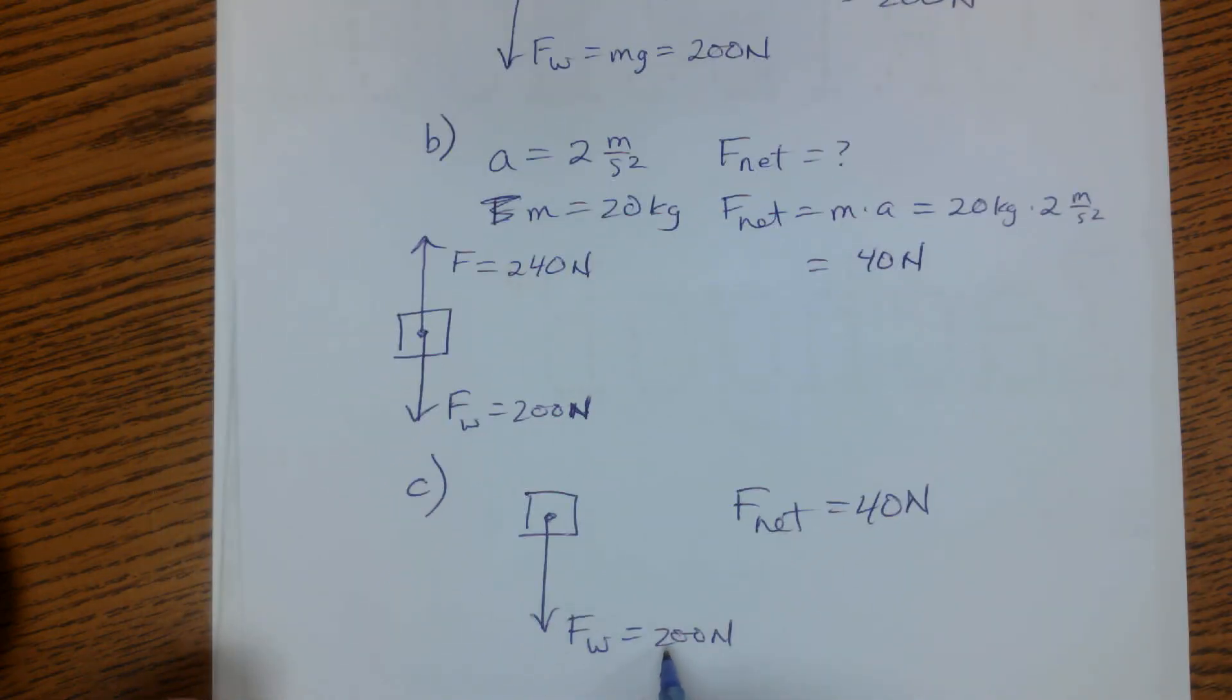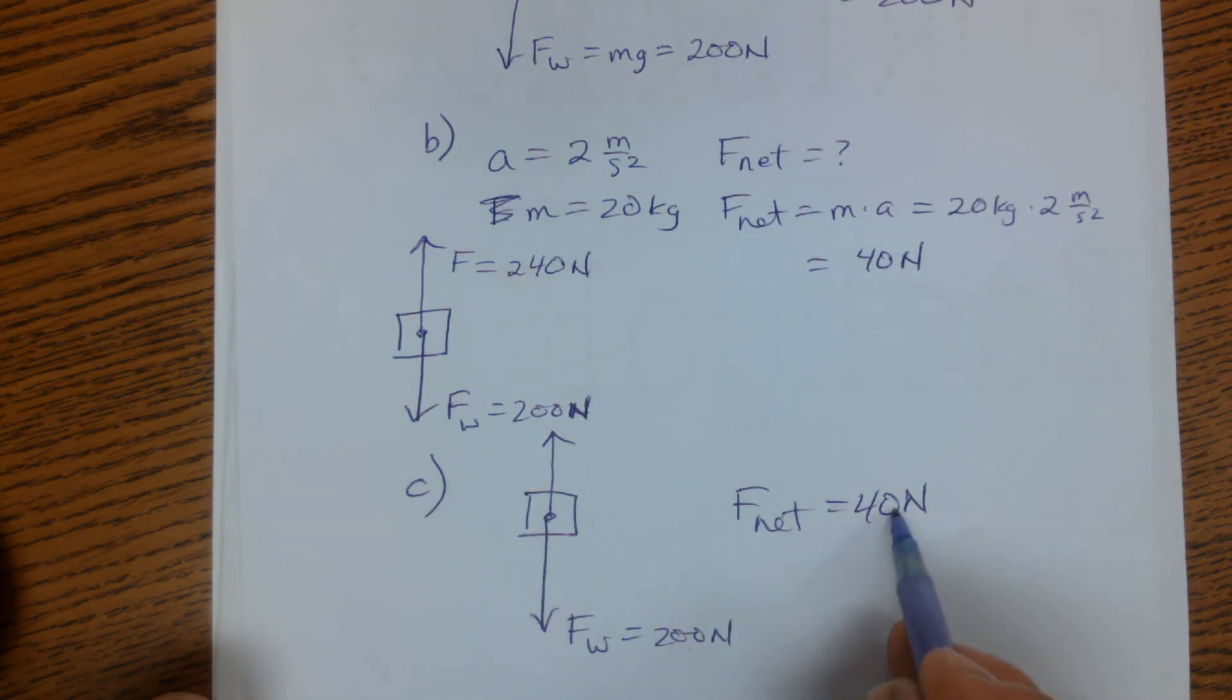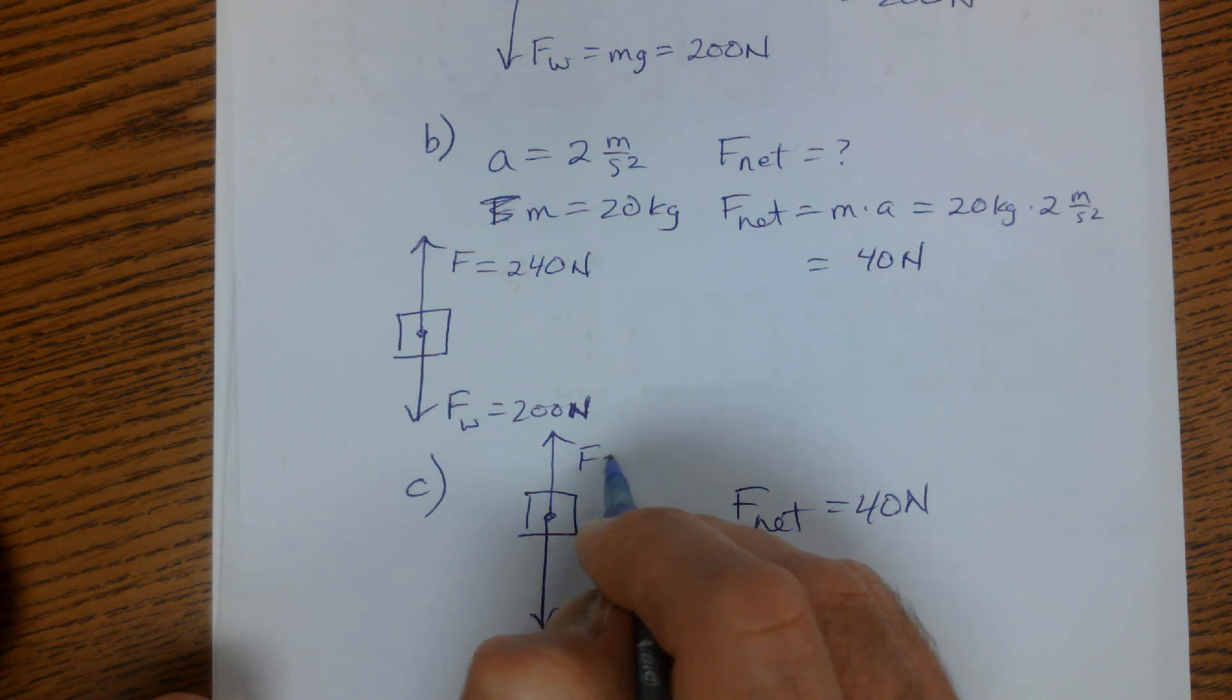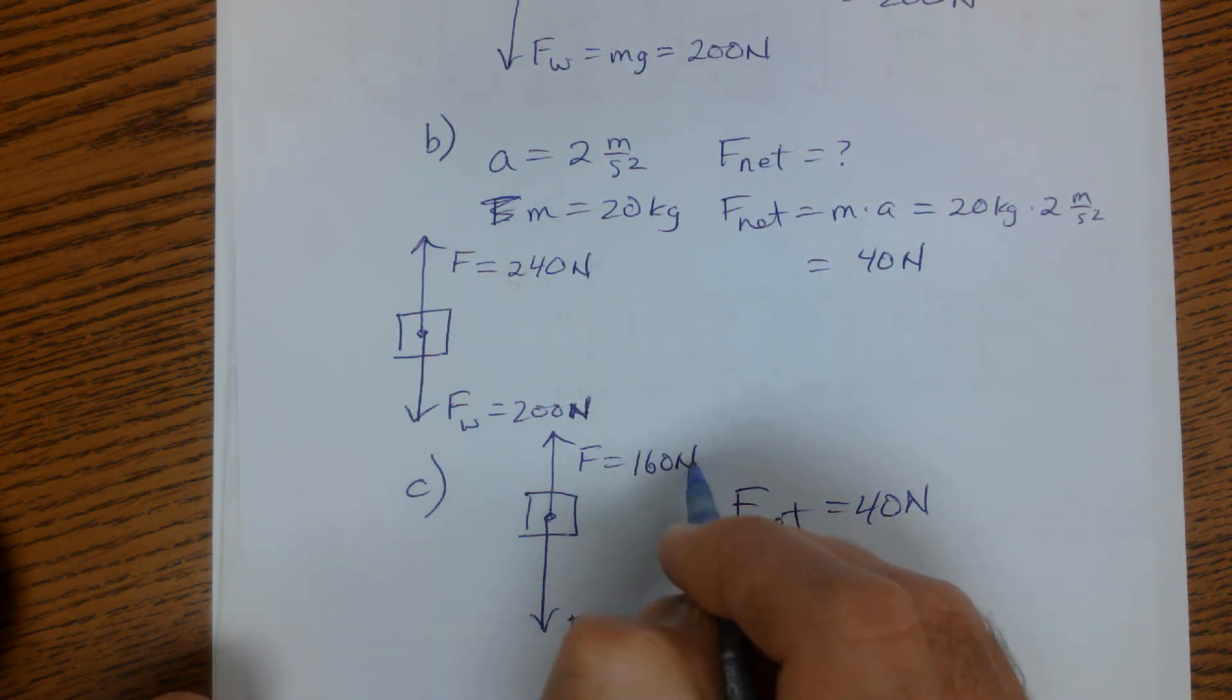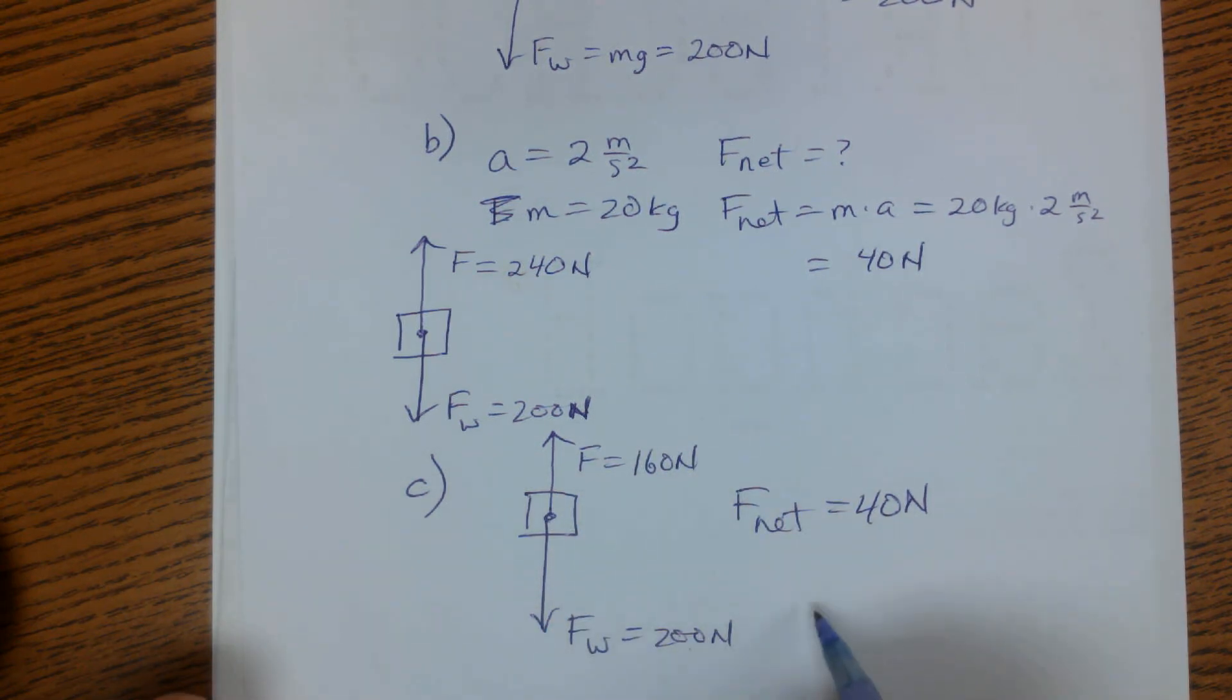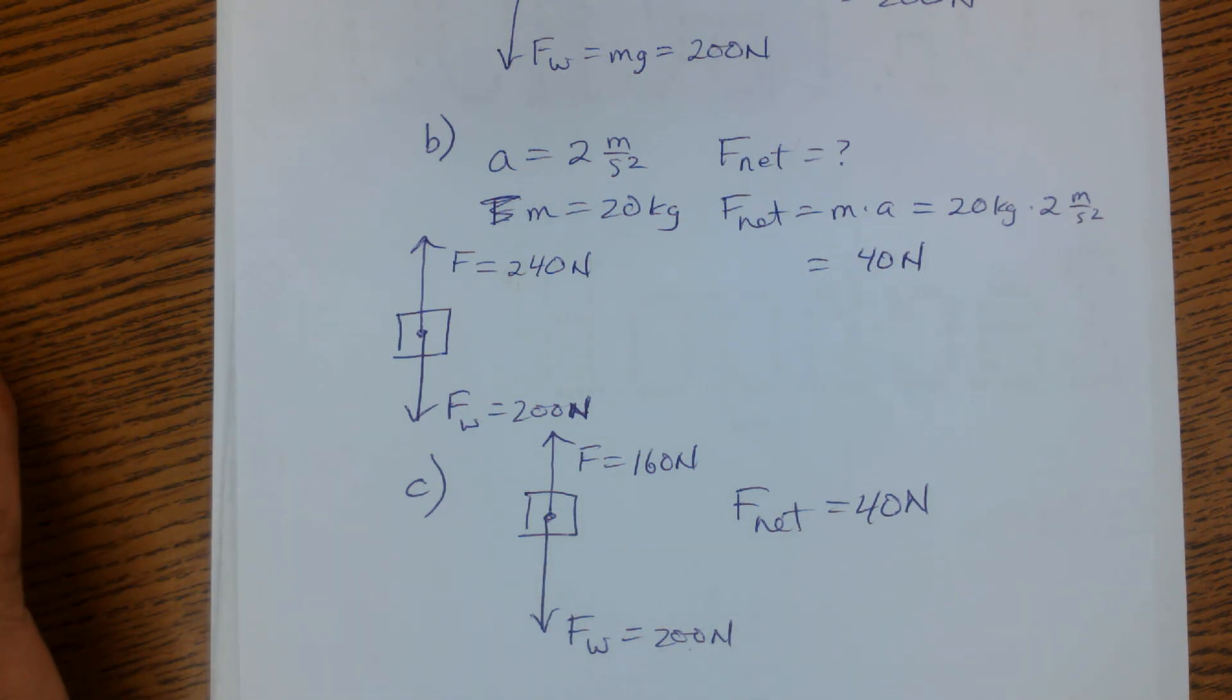The only thing I can do is provide just a little less force. So 200 minus 40 gives me 160 newtons. And so there you go. There's your three answers to that problem.